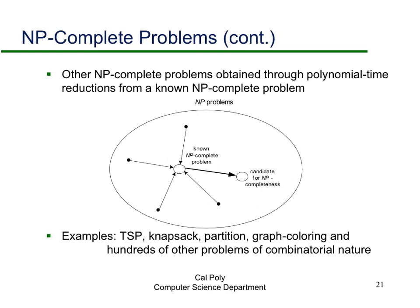It turns out there are hundreds of NP-complete problems: the traveling salesperson problem (decision version), decision version of knapsack, partition problem, graph coloring, and hundreds more. What's interesting is these problems are all of different types — some involve numbers, some graphs, some matching. Yet they are all at the same level of difficulty in the sense that we don't know if polynomial time algorithms exist for them, and they're all equivalent in terms of difficulty.